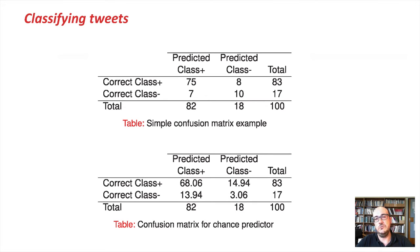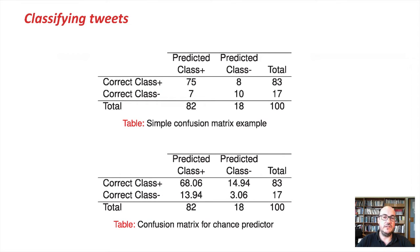An important thing we need to look at when classifying tweets is whether the data is balanced or not. In this simple confusion matrix, we see that we are predicting 82% as positive and 18% of the instances as negative. We are classifying the positive class correctly 75% of the time, and the negative class correctly 10% of the time. Our accuracy in this case is 85%. Is this a good performance?